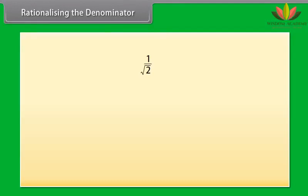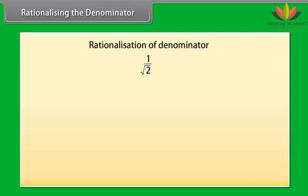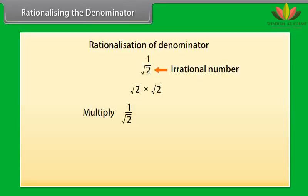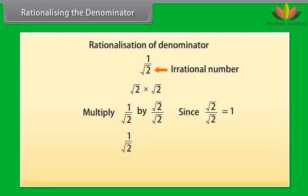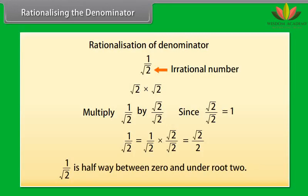Rationalizing the denominator. Consider 1/√2 — it is difficult to tell its position on the number line. But if we rationalize the denominator, making it rational, we can easily locate it. Since √2 is irrational, multiplying it by itself makes it rational. So we multiply 1/√2 by √2/√2, which equals 1. Therefore 1/√2 = √2/2. Now it is easy to locate 1/√2 on the number line — it is halfway between 0 and √2.